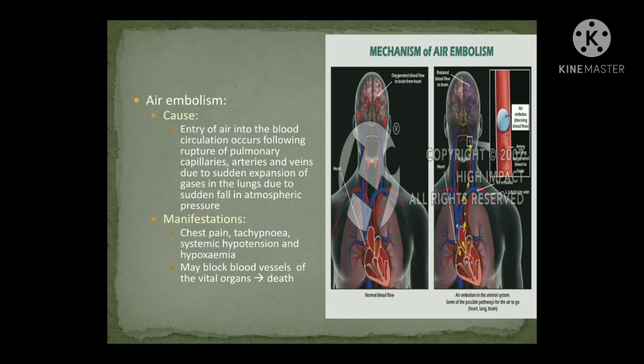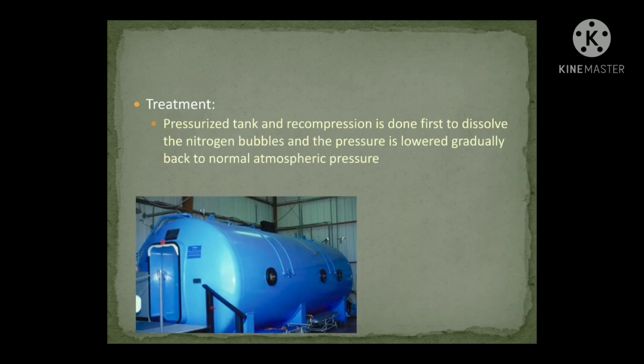Blockage of blood vessels of vital organs may result in death. Treatment of decompression sickness: the subject should be brought to the surface slowly and placed in a compression chamber when complaining of pain in muscles and joints. This dissolves nitrogen bubbles — recompression is done first, then slow decompression, so the body can get rid of nitrogen slowly.